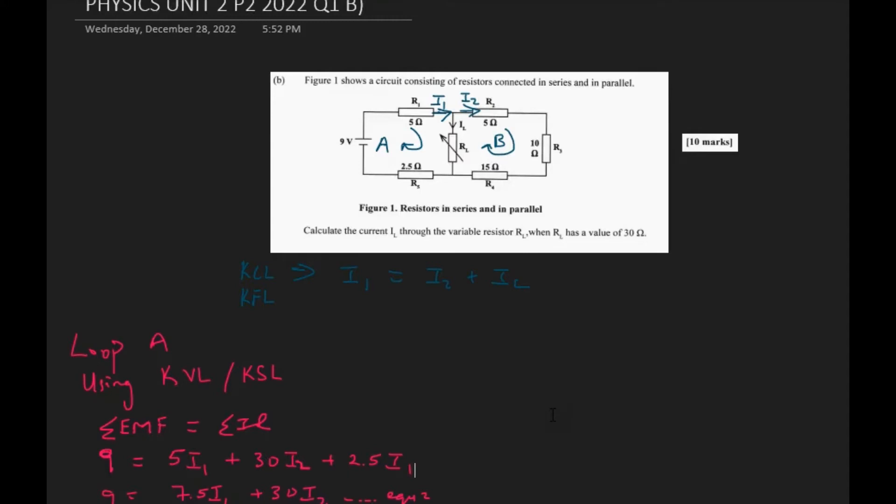Based on this question, the initial part is really asking us to determine the current IL that is flowing through the variable resistor.